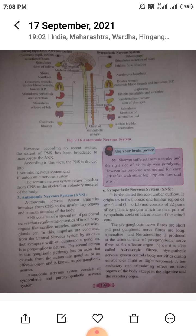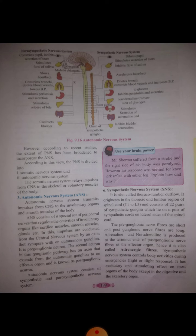In the sympathetic nervous system, the preganglionic nerve fibers are short and the postganglionic nerve fibers are long. Adrenaline and noradrenaline are produced at the terminal ends of postganglionic nerve fibers at the effector organ. Hence, they are called adrenergic fibers.